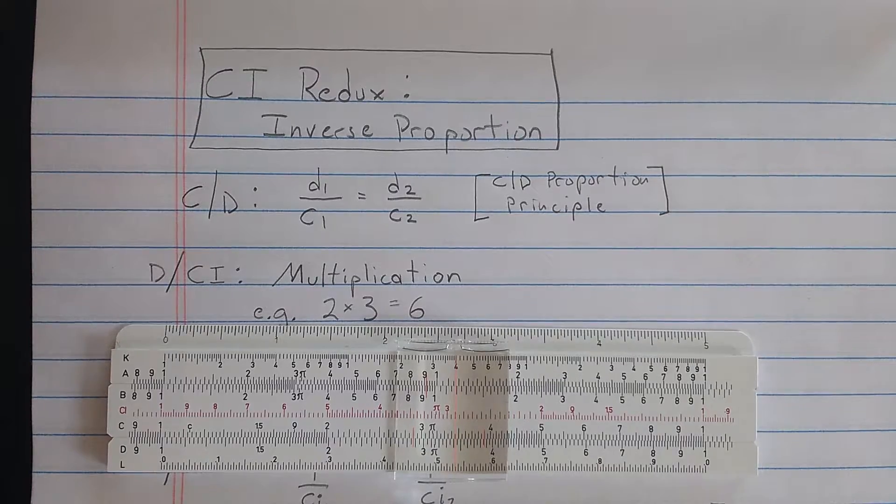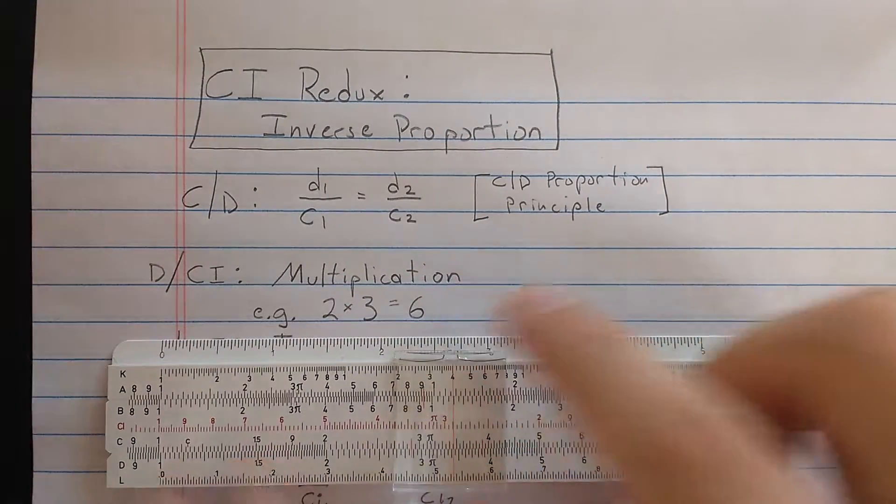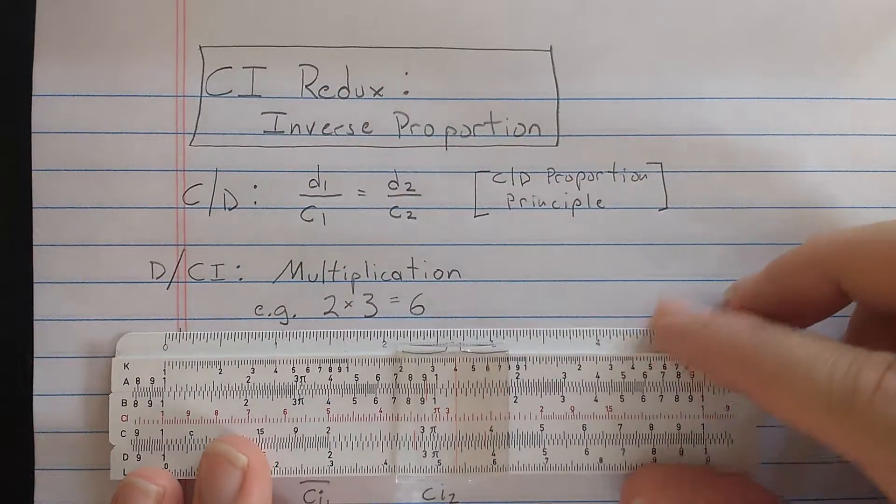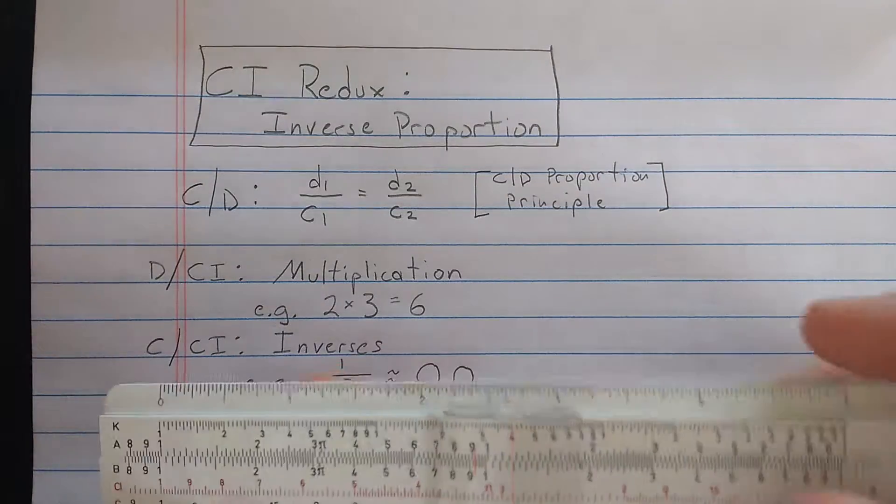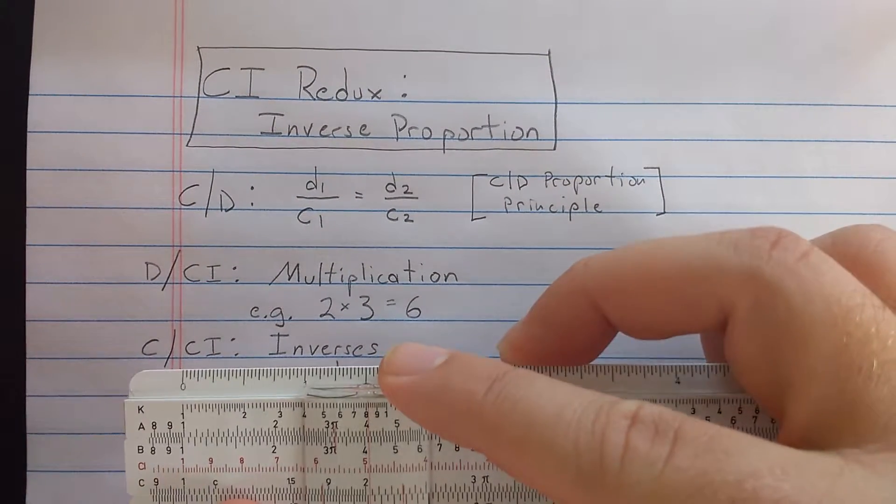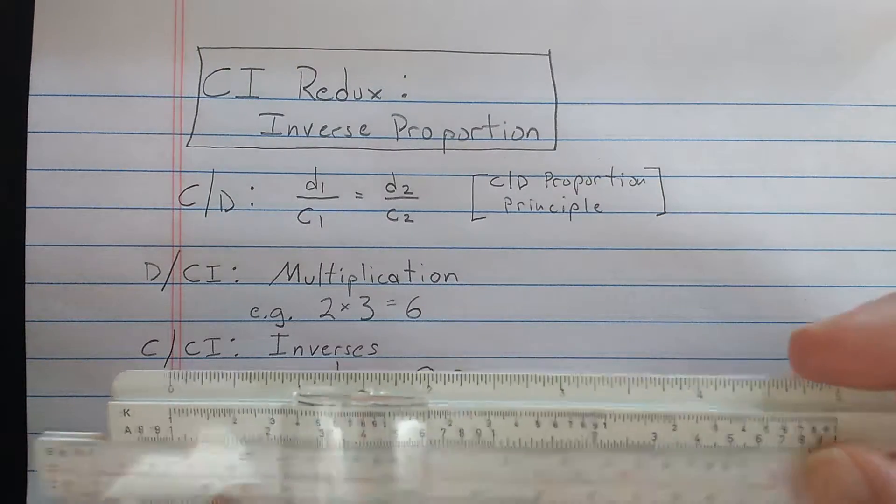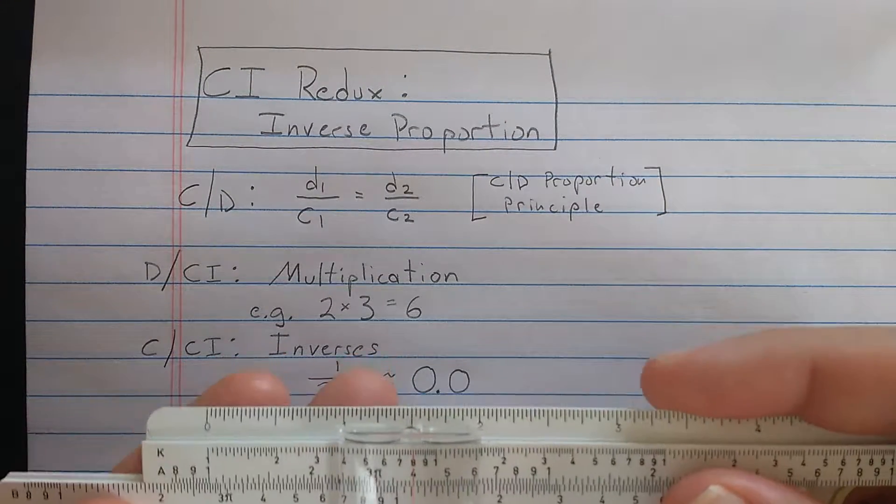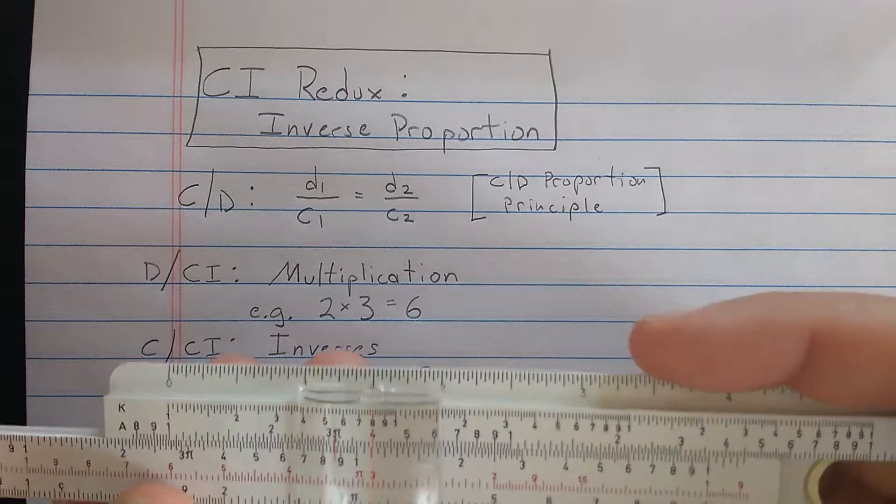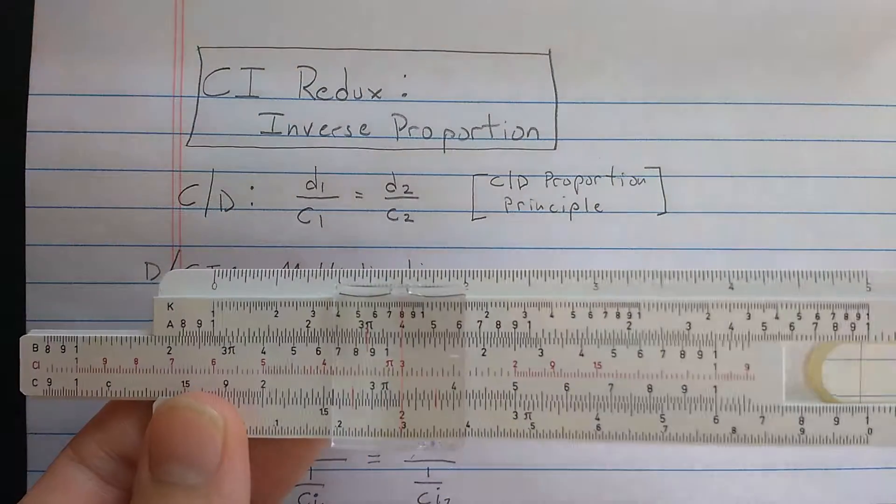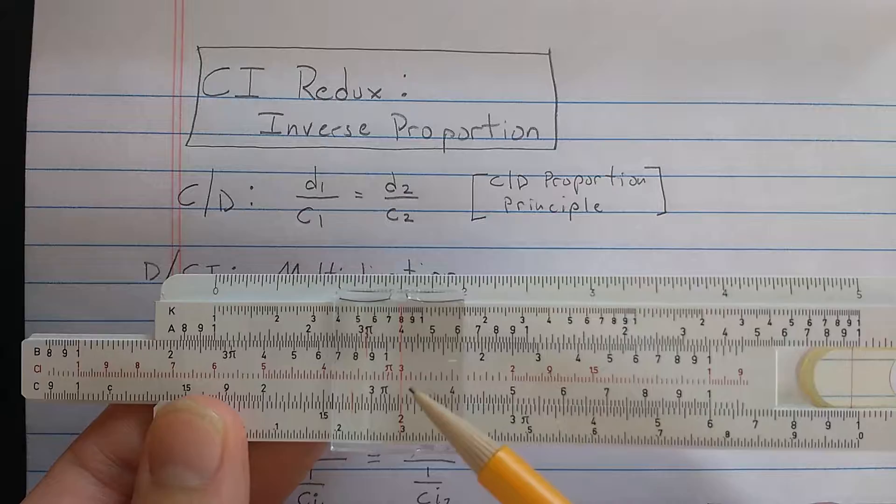At that point, we talked about how the CI scale does multiplication. So remember we said if you want to multiply 2 times 3 using the CI scale, first find 2 on the D scale, then using the CI scale, which reads backwards, find 3.